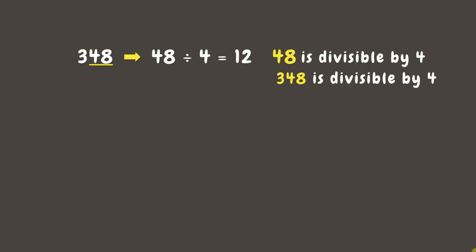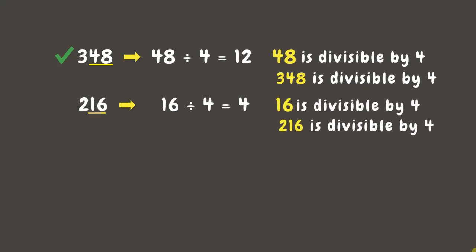Let's try another one: number 216. Since its last two digits, which are 16, are divisible by 4, we can say that 216 is also divisible by 4.